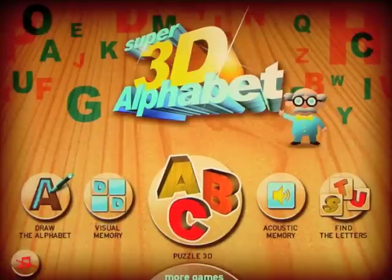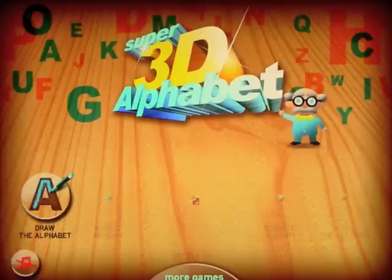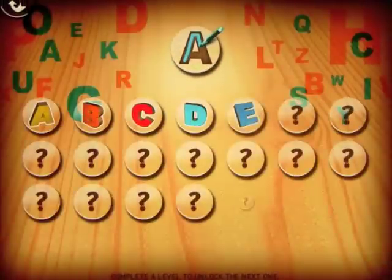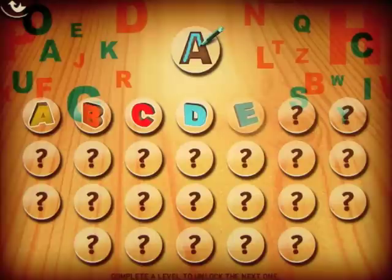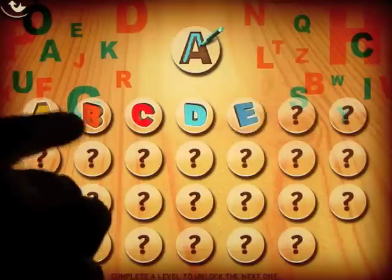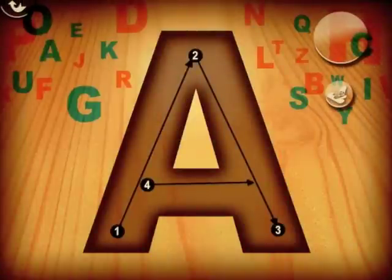We've got Draw the Alphabet, Visual Memory, Puzzle 3D, Acoustic Memory, and Find the Letter. So let's go ahead and look at Draw the Alphabet. What you'll find is that you have 26 letters, and as you complete a letter you unlock another one. For example, you would start with the letter A and you would follow the numbers.